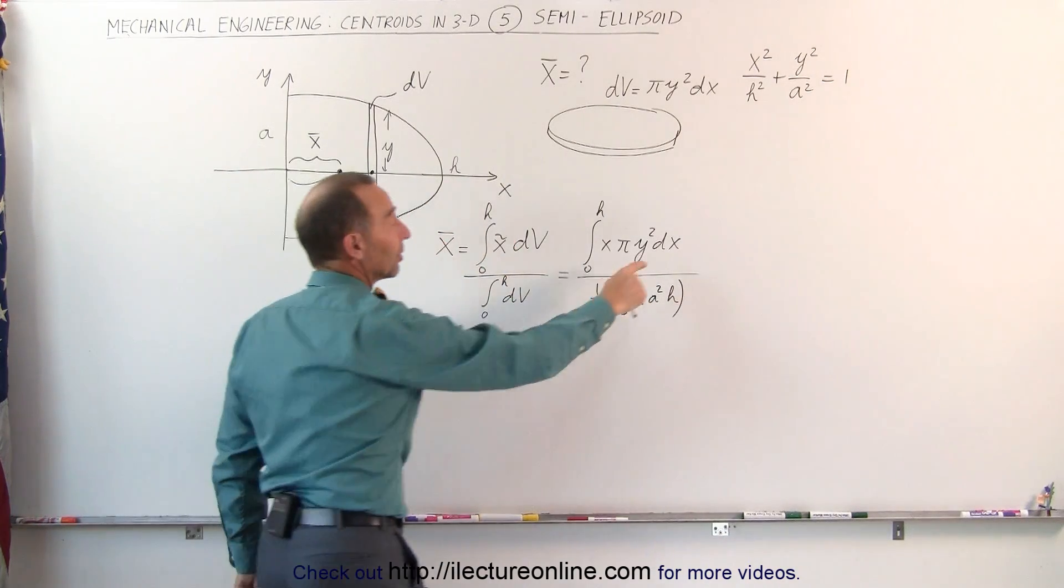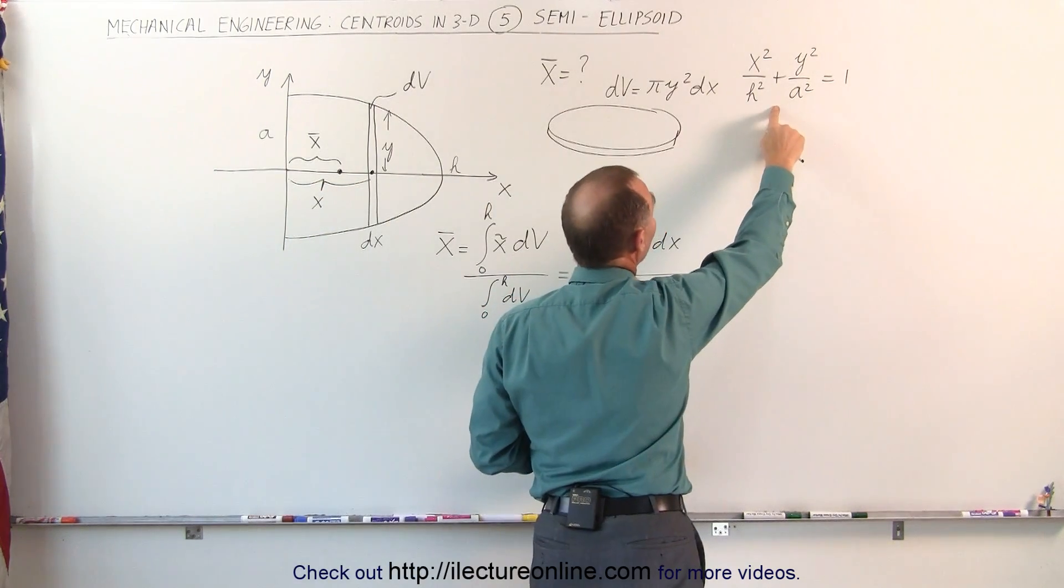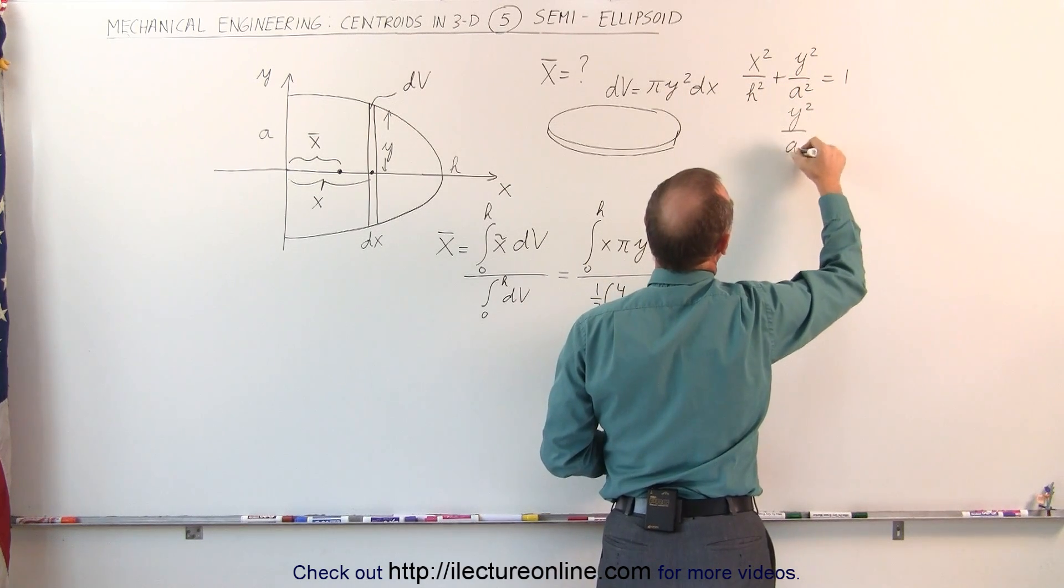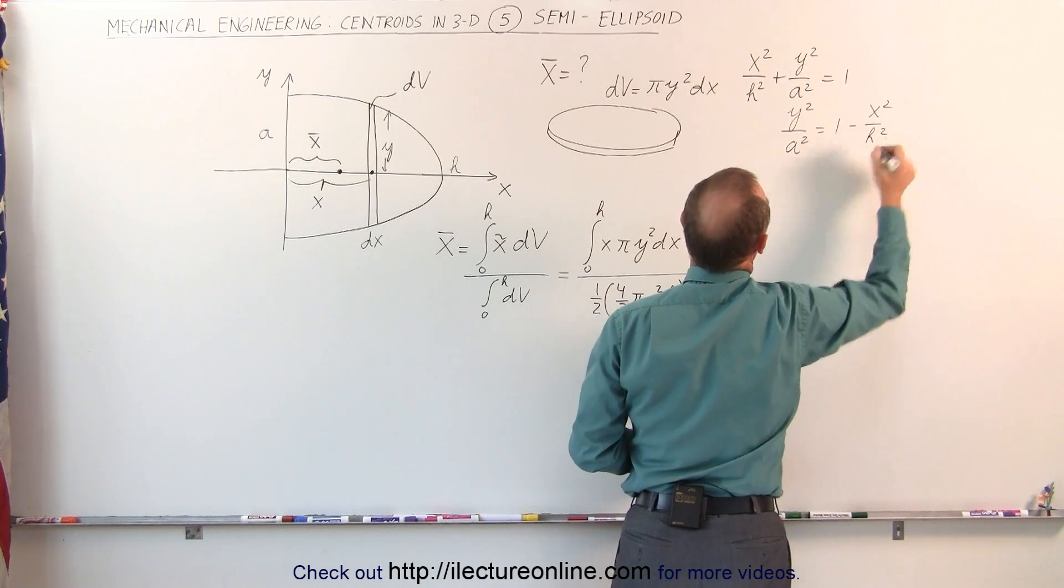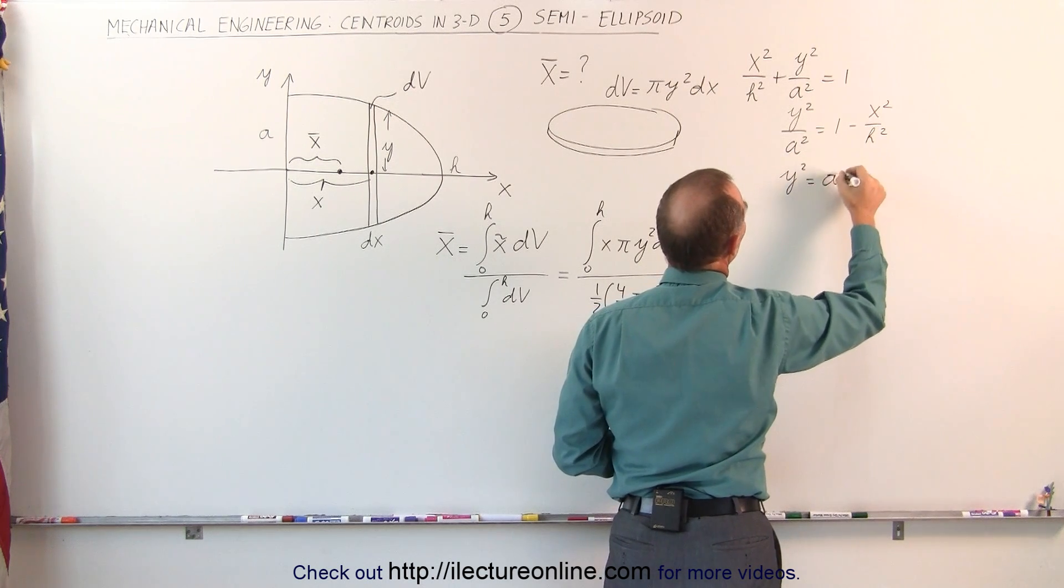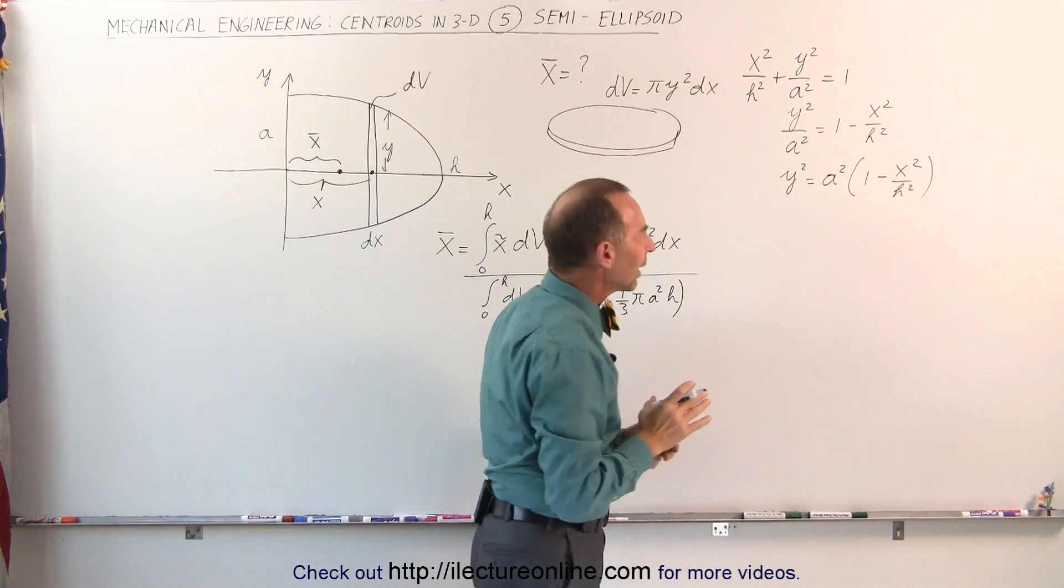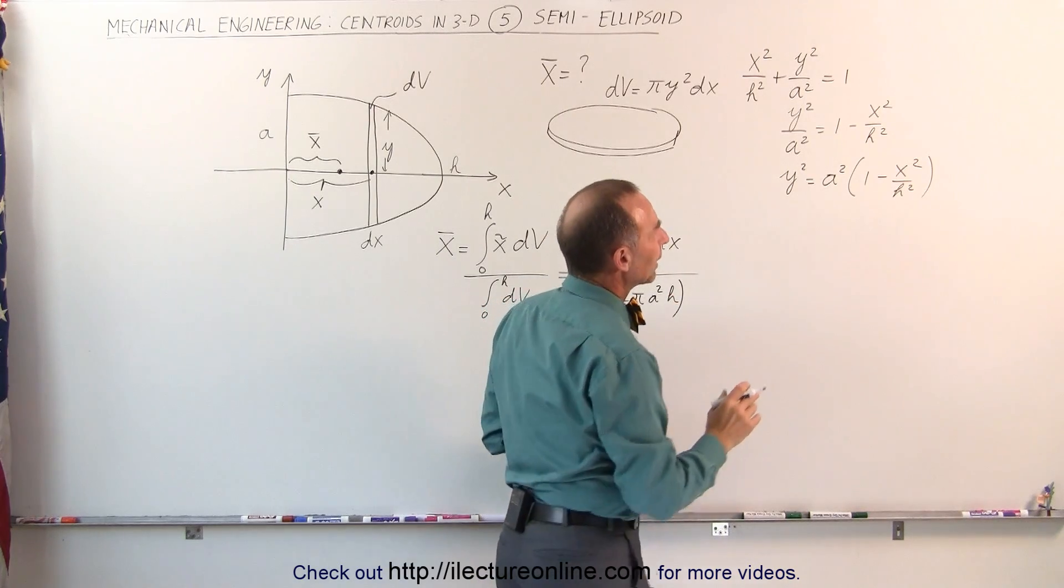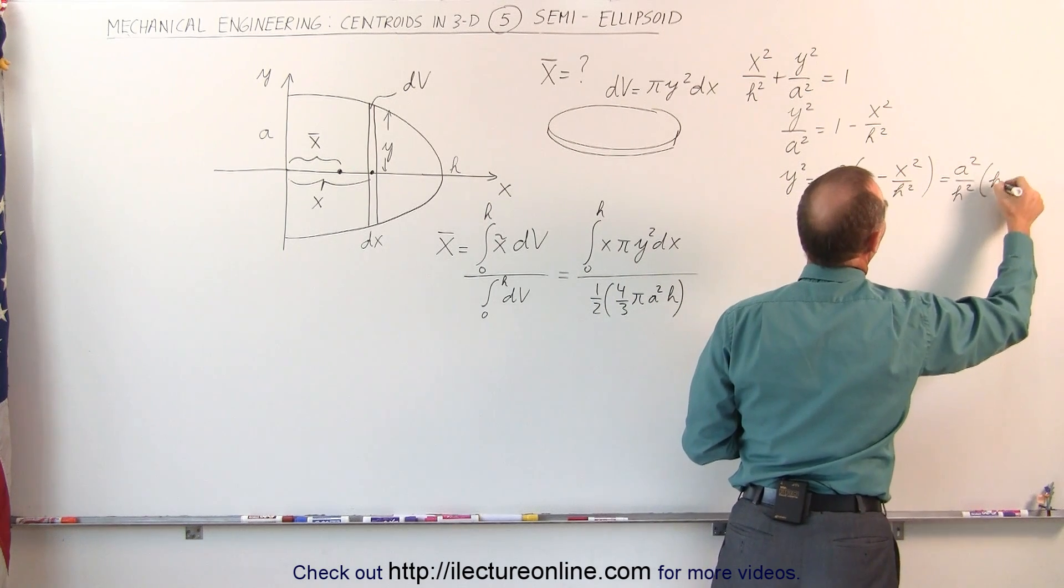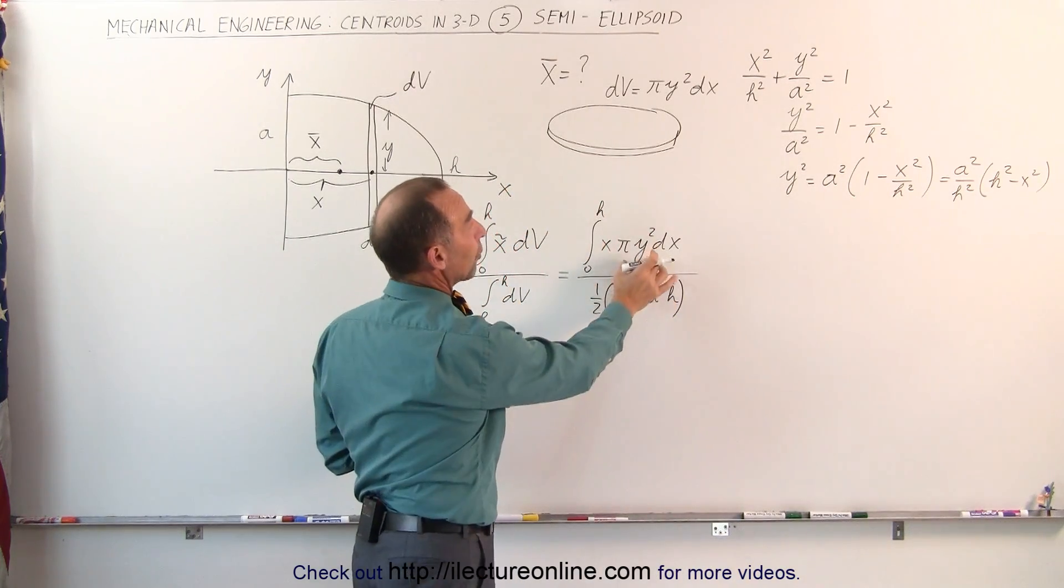Now, of course, we have a dx here and a y². We want to express the y² in terms of x, and we must use the equation of an ellipse to accomplish that. So we need to solve this for y². That means we have y²/a² = 1 - x²/h². Multiplying both sides by a², we get y² = a²(1 - x²/h²). And we want to probably write that slightly differently. We want to put that over the common denominator. So this can also be written as (a²/h²)(h² - x²). Writing it like that makes it a little bit easier to integrate.